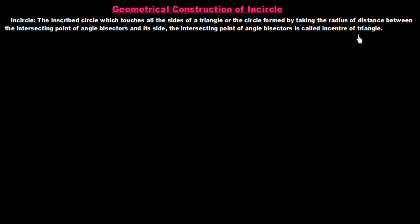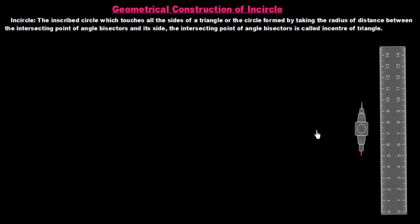The intersecting point of angle bisectors is called the incenter of the triangle. For this construction we need two apparatus: one is the ruler and the other is the compass. We require these two things to construct an incircle. First of all, we draw a triangle in which we have to draw the incircle.